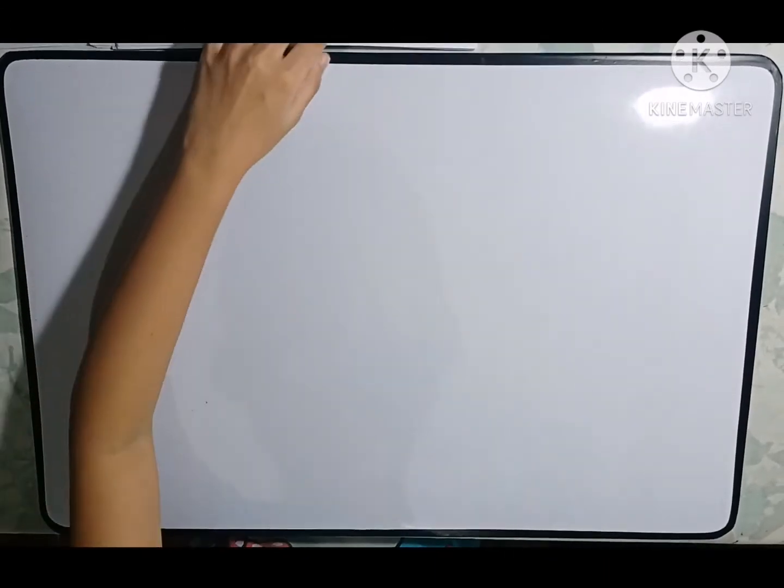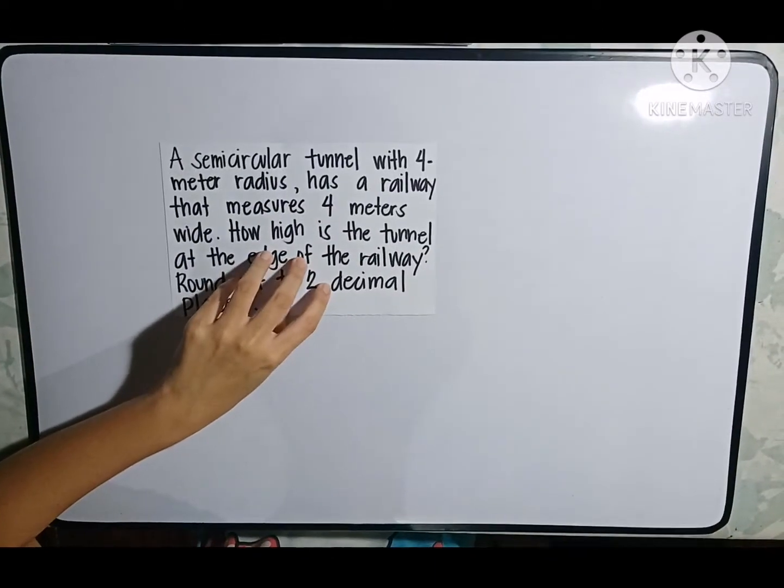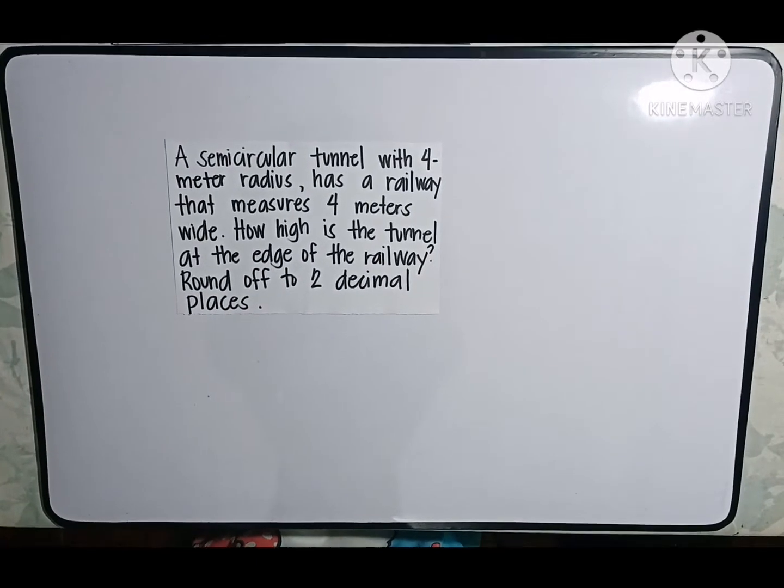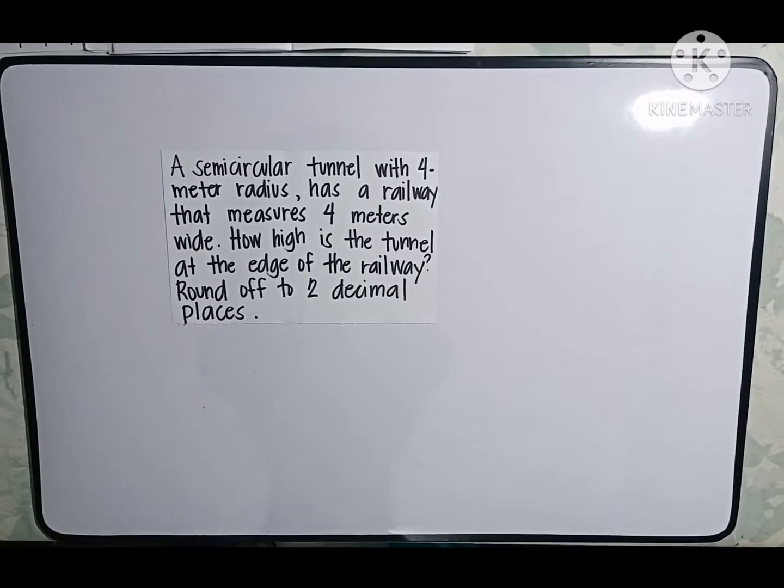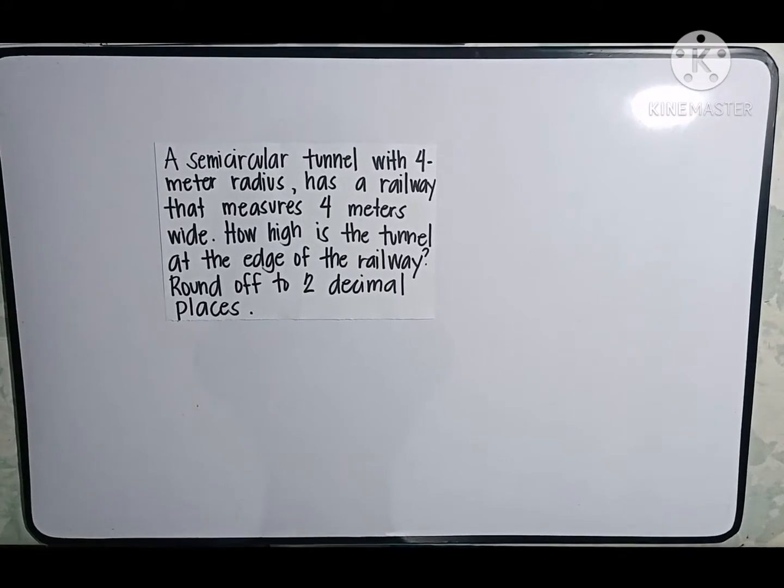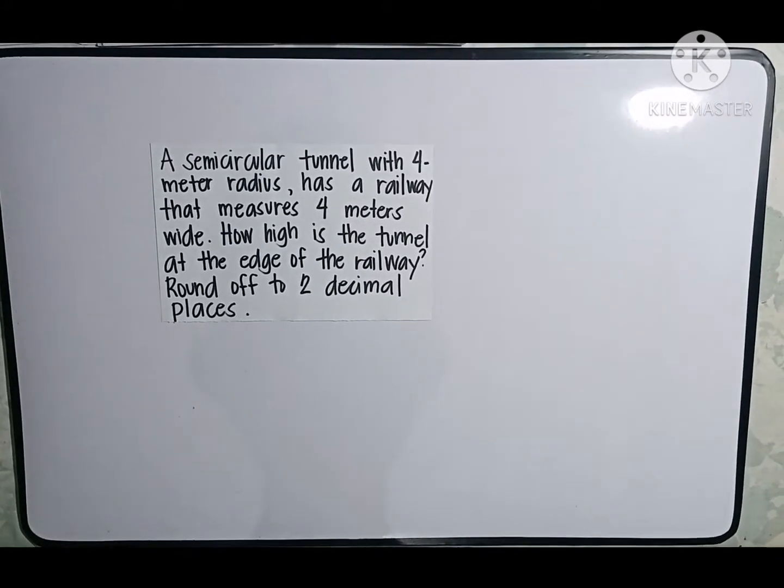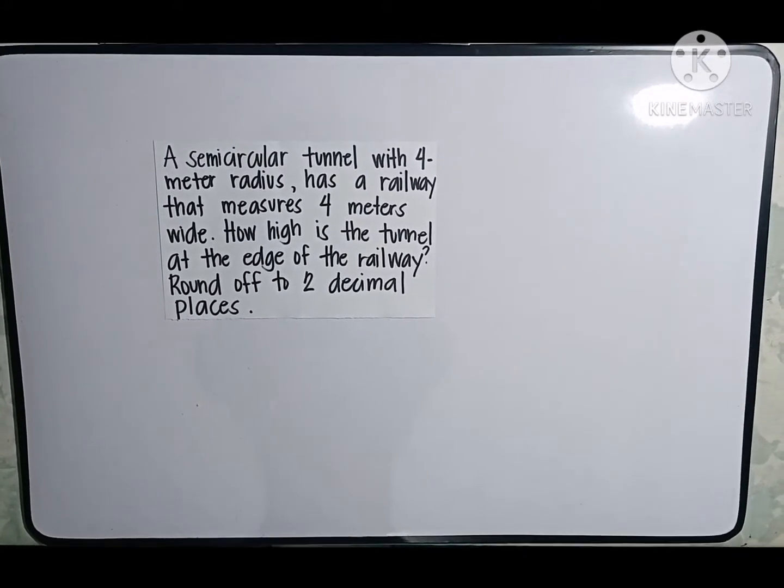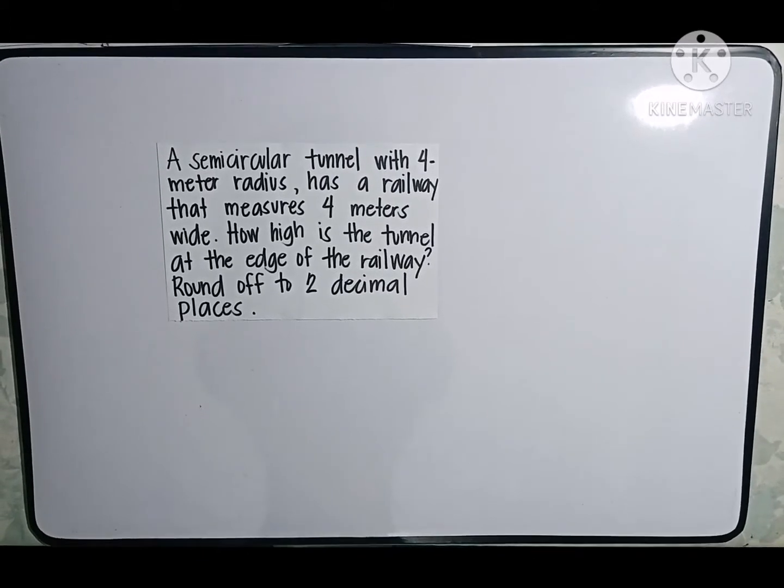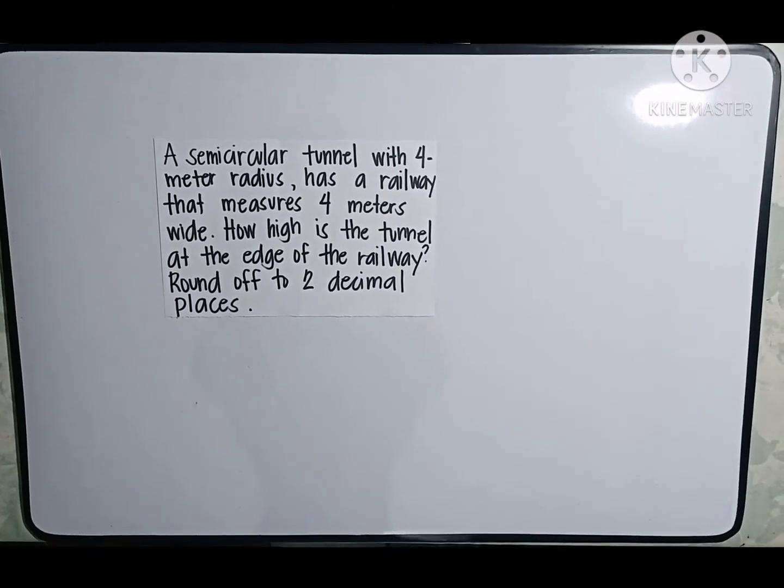We have here a problem stated that a semicircular tunnel with 4 meter radius has a railway that measures 4 meters wide. How high is the tunnel at the edge of the railway? Round up to 2 decimal places.